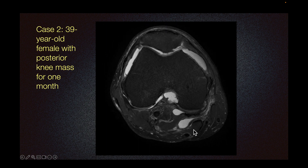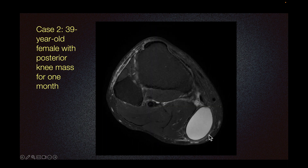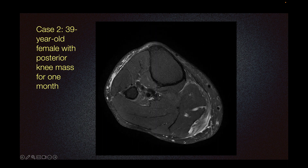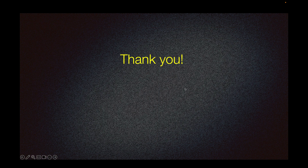One more time: semimembranosus, medial head of gastrocnemius, and some edema around. Let's go back to our original case. Here, MG indicates medial head of gastrocnemius, SM indicates semimembranosus, and there's a cyst in between these two, which is a Baker's cyst. Here we can see a needle going to the cyst. Thank you for watching the video.